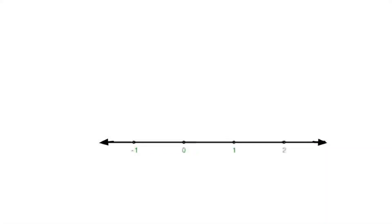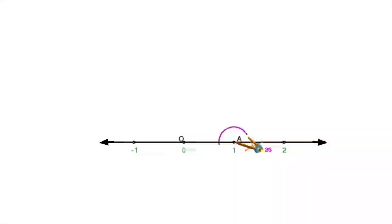So my number line is ready now. I mark the point zero as point O and I mark the point one as A. So I have got the base OA of the triangle OAB which is one unit. Now at point A I will draw a 90 degree angle. I have made an arc cutting the baseline at both ends, marking those points as P and Q wherever the arc intersects the baseline.